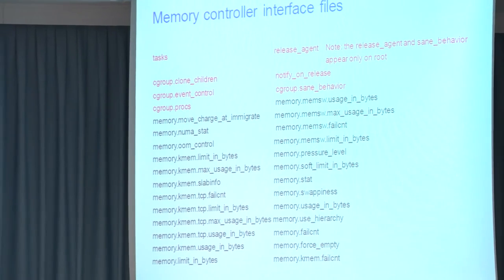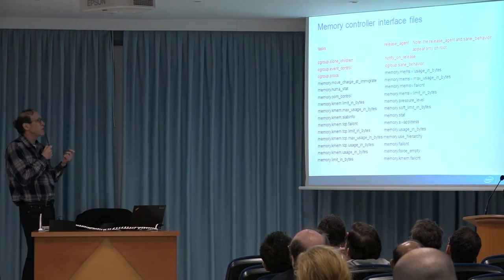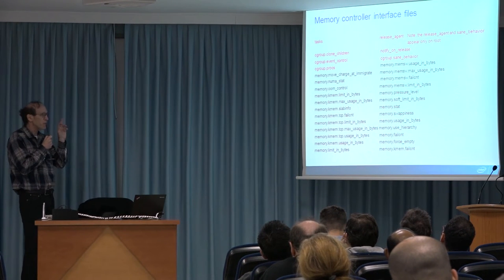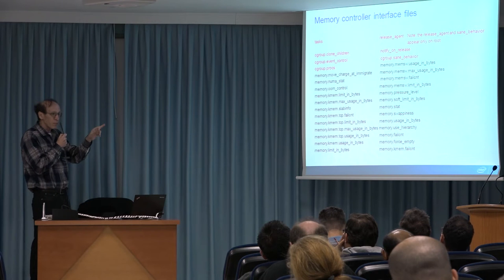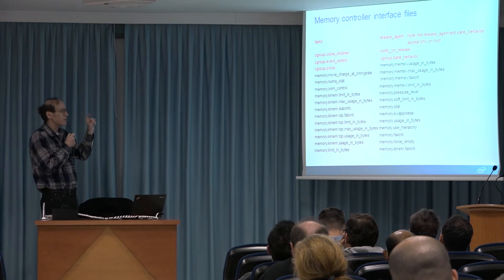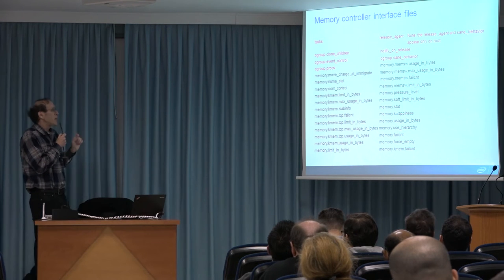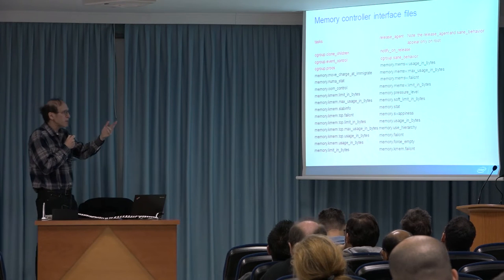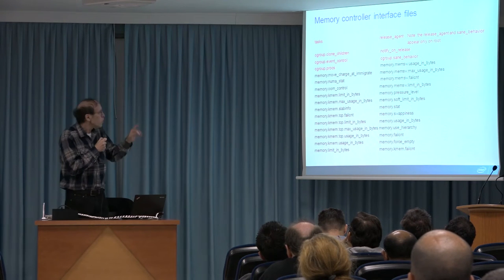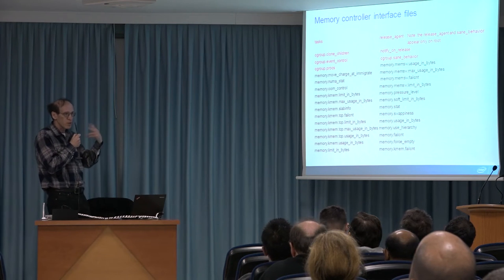When you create a Cgroup, each controller has its own unique interface files. For example, here we see the interface files of the memory controller in black, and in red we see the Cgroup core interface files, which are created for each group and subgroup. We'll see how to use these interface files to set limits or read statistics, and also how to use the Cgroup core interfaces to attach a process to a group.